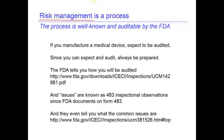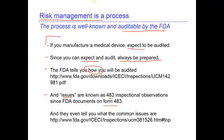Risk management is a very well-known process, and it's audited by the FDA. If you manufacture a medical device, expect to be audited, and since you can expect an audit, always be prepared. The FDA tells you exactly how they are going to audit you — there's a document on the FDA website that outlines in very specific detail exactly how you'll be audited. Furthermore, the FDA makes you aware of issues known as 483 inspectional observations, based on the form used to report them. Not only do they report those issues, but on the FDA website they also tell you what the common issues are.